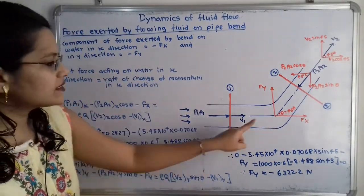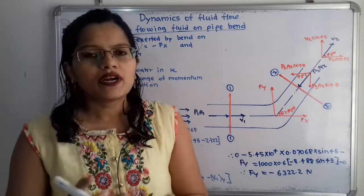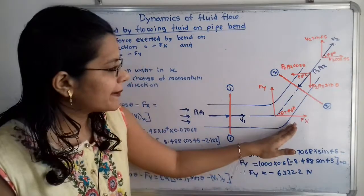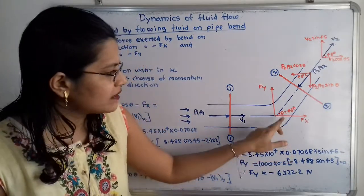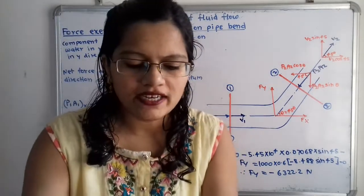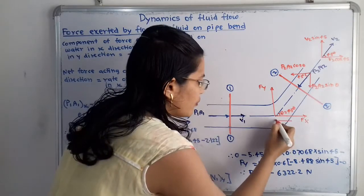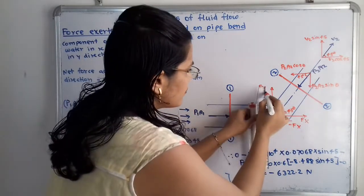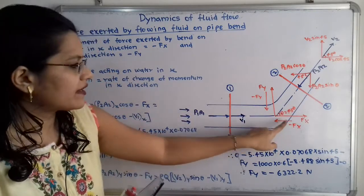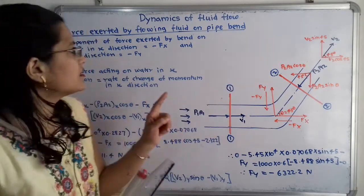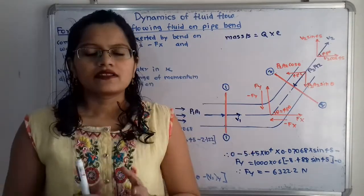These forces represent what water exerts on the bend. By Newton's third law, the force exerted by the bend on the water is equal in magnitude but opposite in direction. So the components of force exerted by the bend on water are −Fx in the x-direction and −Fy in the y-direction.